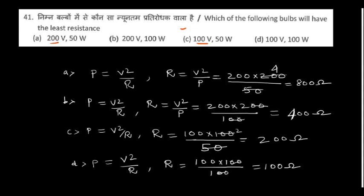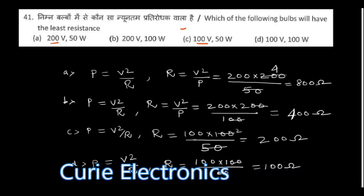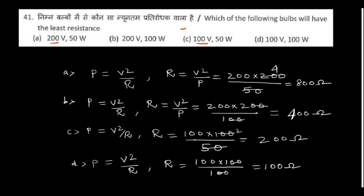Question number 41: Which of the following bulbs will have the least resistance? The brightness of a bulb is related to its resistance. If you have a 100V 50W bulb and a 100V 100W bulb, more current flows through the 100V 100W bulb, so that bulb has the least resistance.